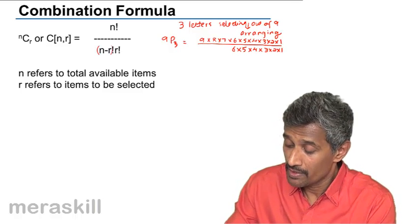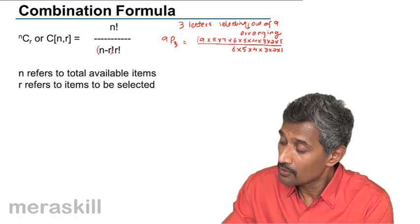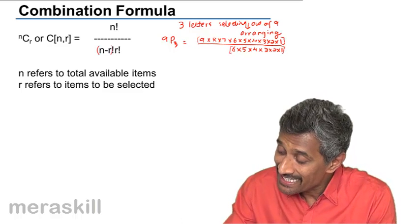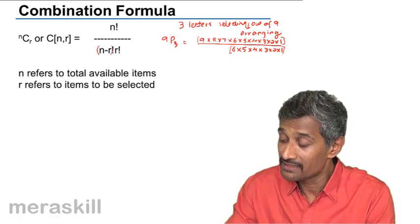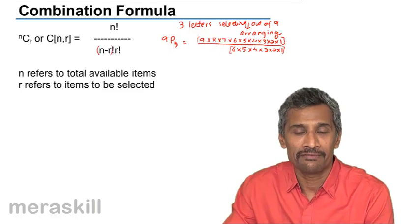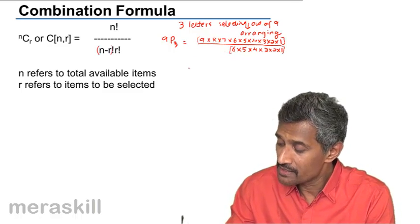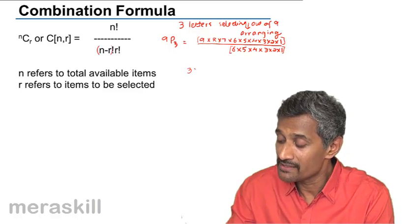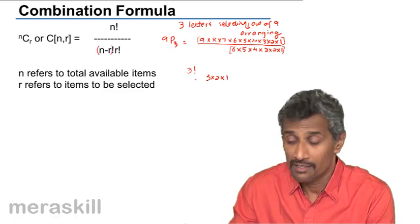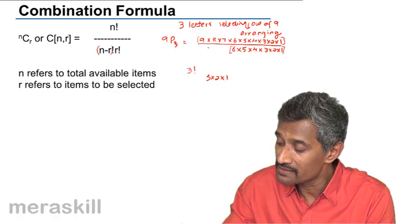Now, if you see, 9P3 involves selecting the three letters and arranging them. But suppose you dispense with the order in which you have arranged them. If you've picked up three letters, you can arrange them in 3 factorial ways, that is 3×2×1 ways. These are the ways in which the three letters that you've picked up have been arranged. So suppose you divide this by 3 factorial.